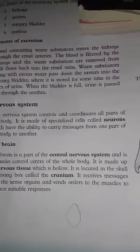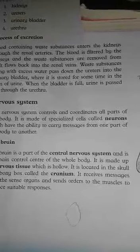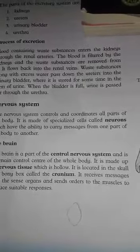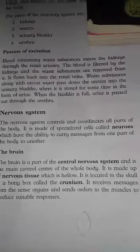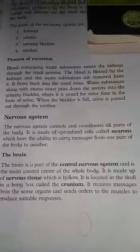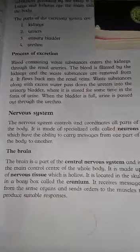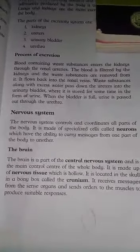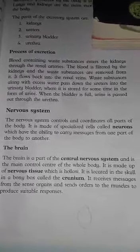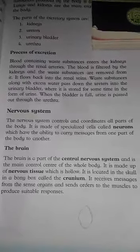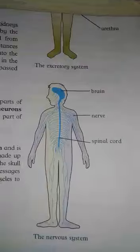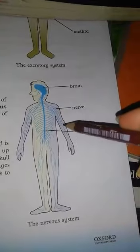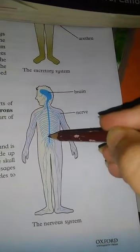Even if we make a small movement, our brain is involved because the brain processes every message. The brain is the central function of the central nervous system as it controls the whole body. The nervous system also includes small nerves spread throughout the body and the spinal cord.